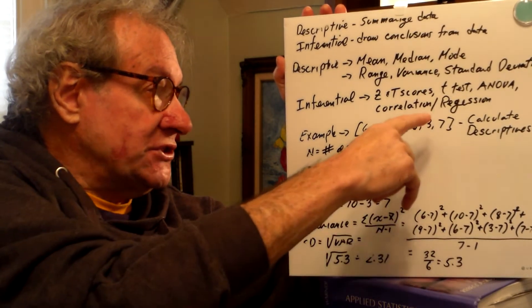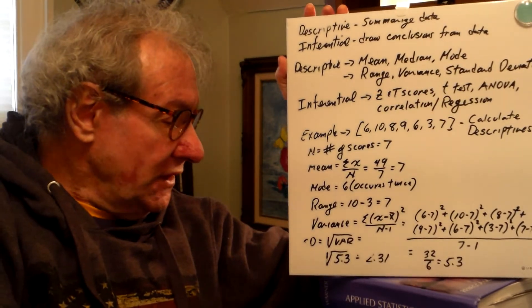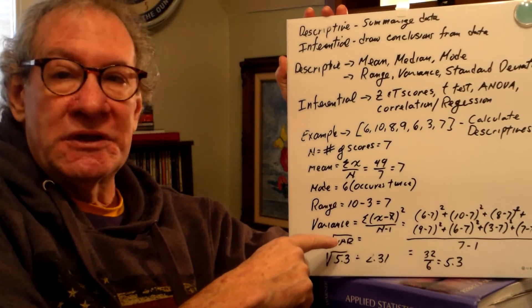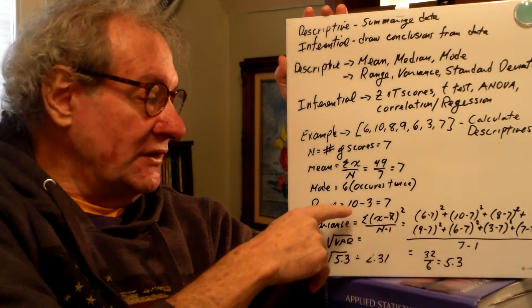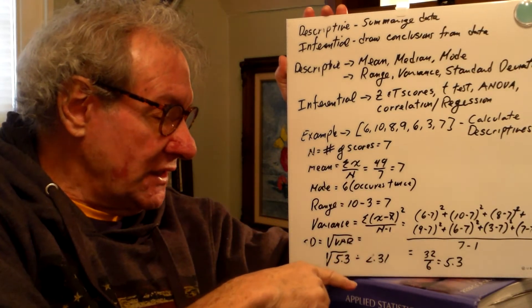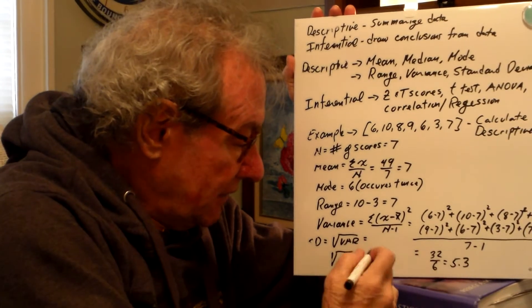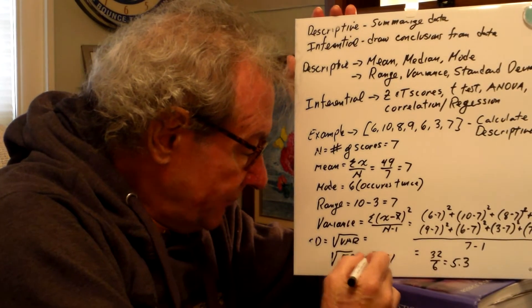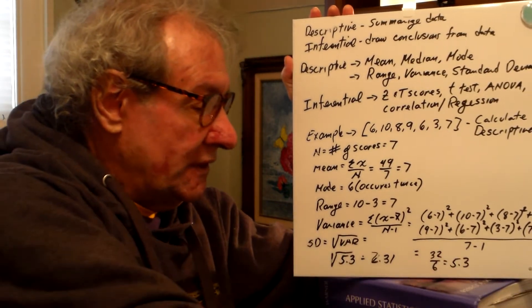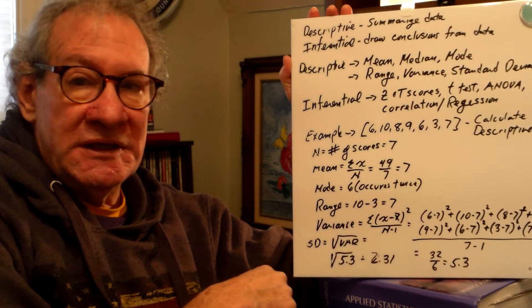But the most challenging will be these last two, the variance and the standard deviation. One thing that you do need to know is that the standard deviation is equal to the square root of the variance. In other words, if you find the variance, which is just going to be a number, and then take the square root of that, then you've got the standard deviation. So let me fix this just a little bit because some of this has moved. And this is the letter s for standard deviation.